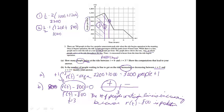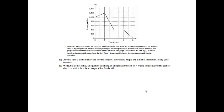You could definitely have justified it a different way. You can certainly ask me what you put to see if it was acceptable. This part was worth just one point. So you either got it right and had a good reason or you didn't. Part C: At what time t is the line for the ride the longest? How many people are in the line at that time? Justify your answers.